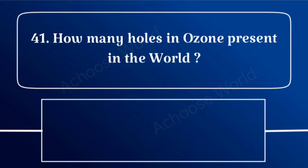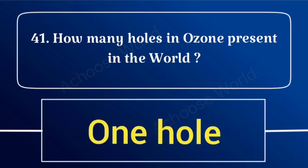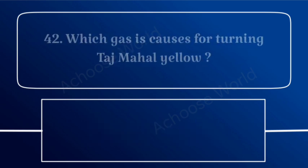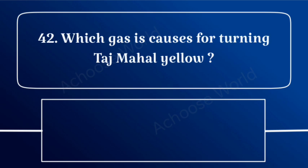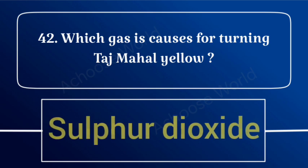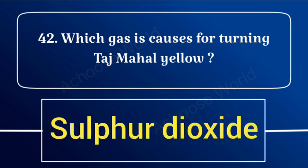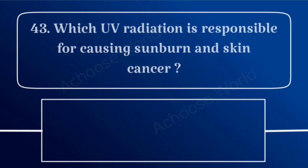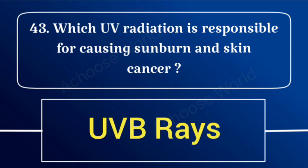How many ozone holes are present in the world? One hole. Which gas is causing the Taj Mahal to turn yellow? Sulphur dioxide. Which UV radiation is responsible for causing sunburn and skin cancer? UVB rays.